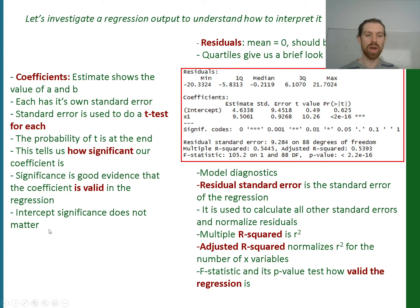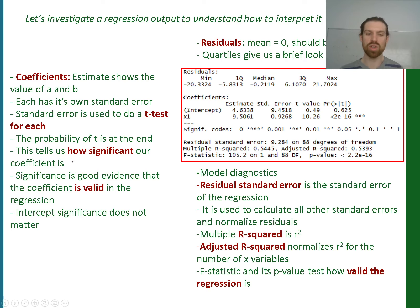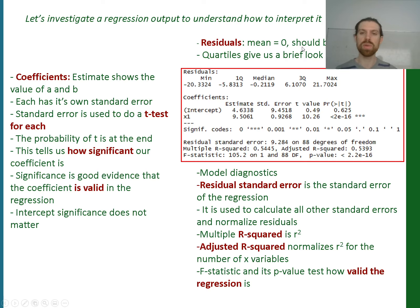The coefficients estimate the value of A and B, each with their own standard error, and you can use that to do a T test. We've got the P values — the probability of that T — which basically says how significant the coefficient is. Significance is indicative of the coefficient being valid in the regression. The intercept significance doesn't really matter that much. Residuals generally: our assumption is that they're normally distributed, so we'd expect a residual mean of something close to zero. Then we have a set of model diagnostics. I've given you a high-level overview and we will pick them up when we get through to the laboratory session. I appreciate this is information overload, but hopefully by the time we've broken this down and gone through it in the next 20 minutes and then get into the lab, it will become a bit clearer.